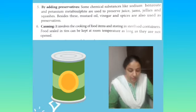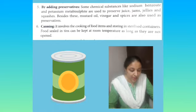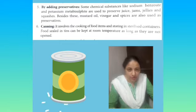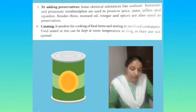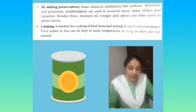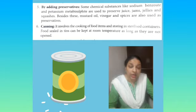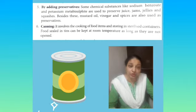'By adding preservatives: some chemical substances like sodium benzoate and potassium metabisulphite are used to preserve juice, jams, jellies, and squashes.' Bita, kuch chemicals hote hain jo use kiye jate hain as preservatives — like sodium benzoate and potassium metabisulphite. Ye market mein available hote hain aur juice, jams, jellies, and squashes mein dale jate hain jisse inki life badh jati hai. 'Besides these, mustard oil, vinegar, and spices are also used as preservatives.'